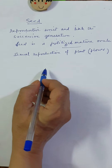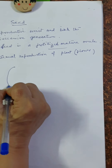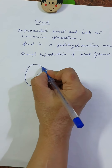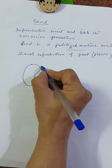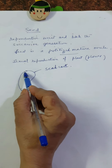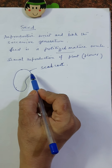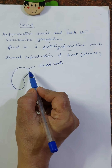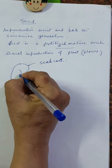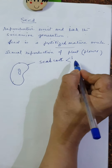Seeds vary from flower to flower and fruit to fruit. The rough structure of a typical seed has an uppermost layer called the seed coat. The outer layer of the seed is the seed coat, which may be one or two layers. It protects the inner embryo.